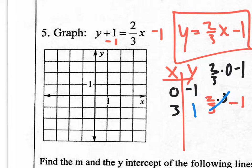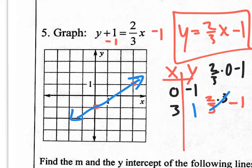If you graph the coordinate (0, -1) — 0 on the x, negative 1 on the y — you'll end up right there. If you graph the coordinate (3, 1), you'll be right there. All you need to do now is draw your line right through those points. I always recommend three points, but you only really need two to graph a line.